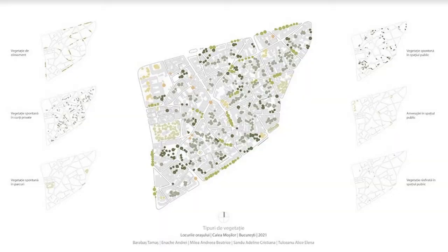Another thing to keep in mind is vegetation and how green an area is, because your project can make an area greener or less green. This is a very important aspect when designing something that aims to be sustainable, because you need to understand the problems of the area in order to design a proposal that solves some of them.